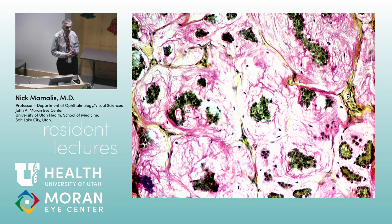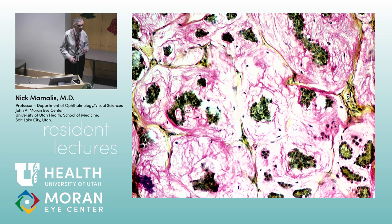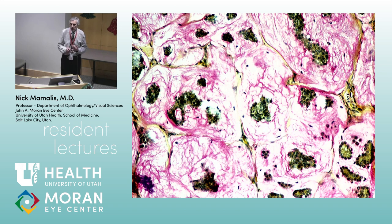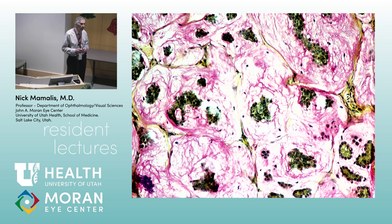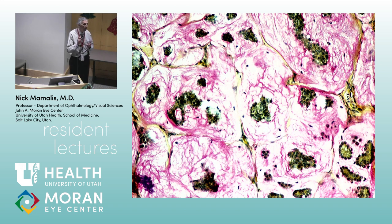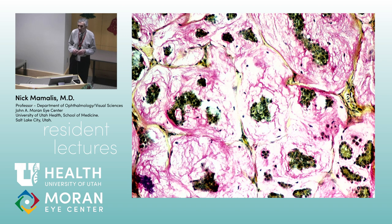There is a mucin stain called mucicarmine — very rarely used. Islands of adenocarcinoma cells swimming in a sea of mucin. These are just weird tumors. So: Merkel cell carcinoma, mucinous adenocarcinoma — hopefully you'll never see them. But you've got to know basal cell, squamous cell, sebaceous, and melanoma — know those down and you'll be okay for boards and more importantly for practice.